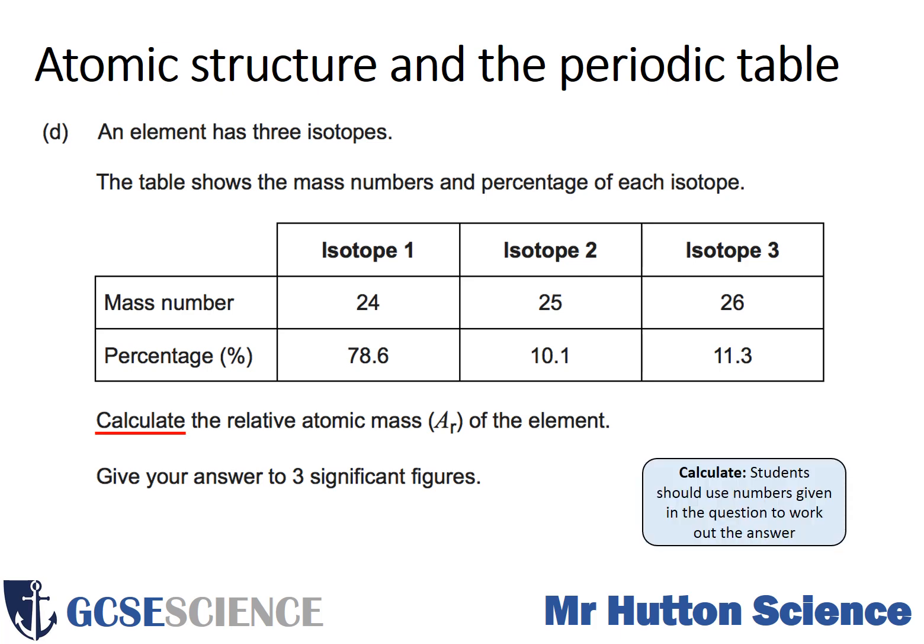The command word here is 'calculate', which means students should use the numbers given in the question to work out the answer. The question asks you to calculate the relative atomic mass of the element. An important point: it states to give your answer to three significant figures, so if your answer is not to three significant figures you will potentially lose marks. To calculate relative atomic mass, multiply the mass number by the percentage abundance of each isotope, add those values up, then divide by the total abundance.